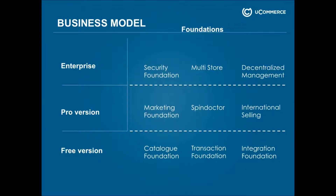Ucommerce comes in three different versions. The free edition is basically everything you need to operate a full store — it's not crippled in any way. You can actually go ahead and launch a full store on it. It's got the catalog foundation, so everything you need to sell. You can load it up with hundreds of thousands of products, with no limitations on the amount, and as many categories as you want.